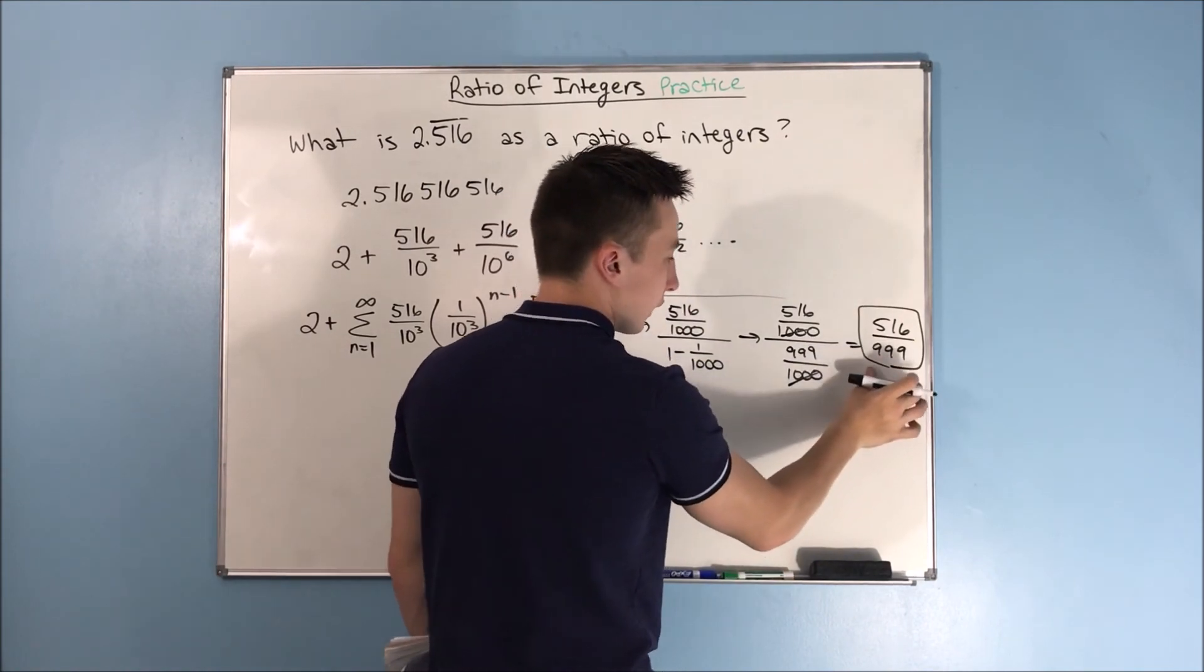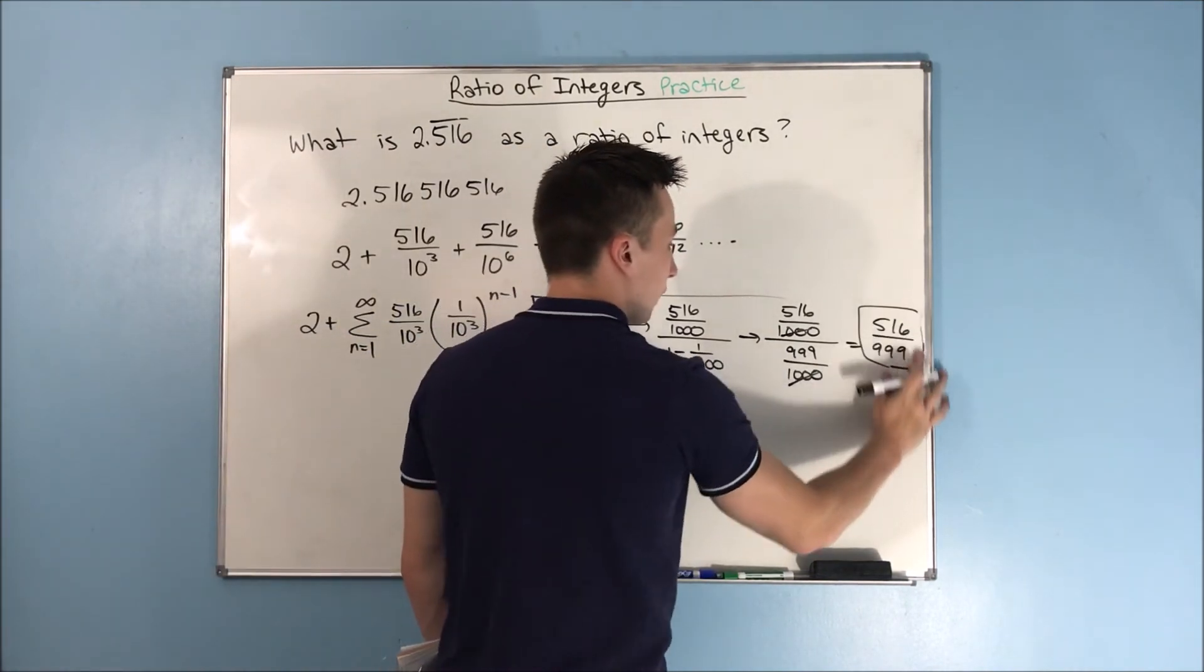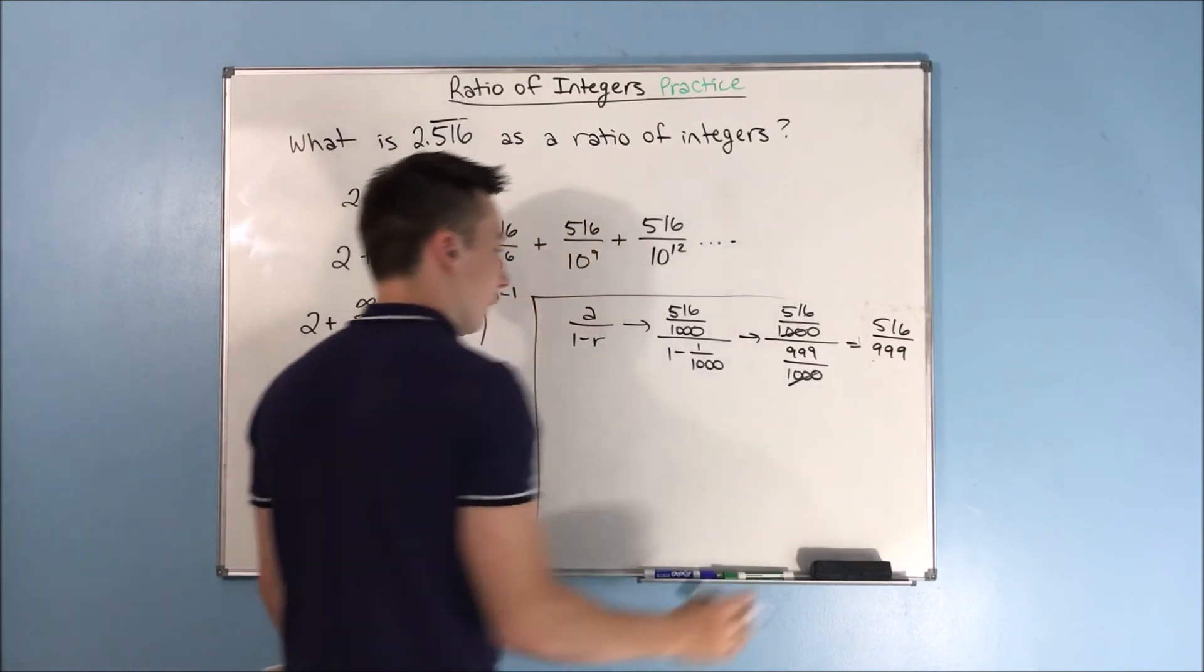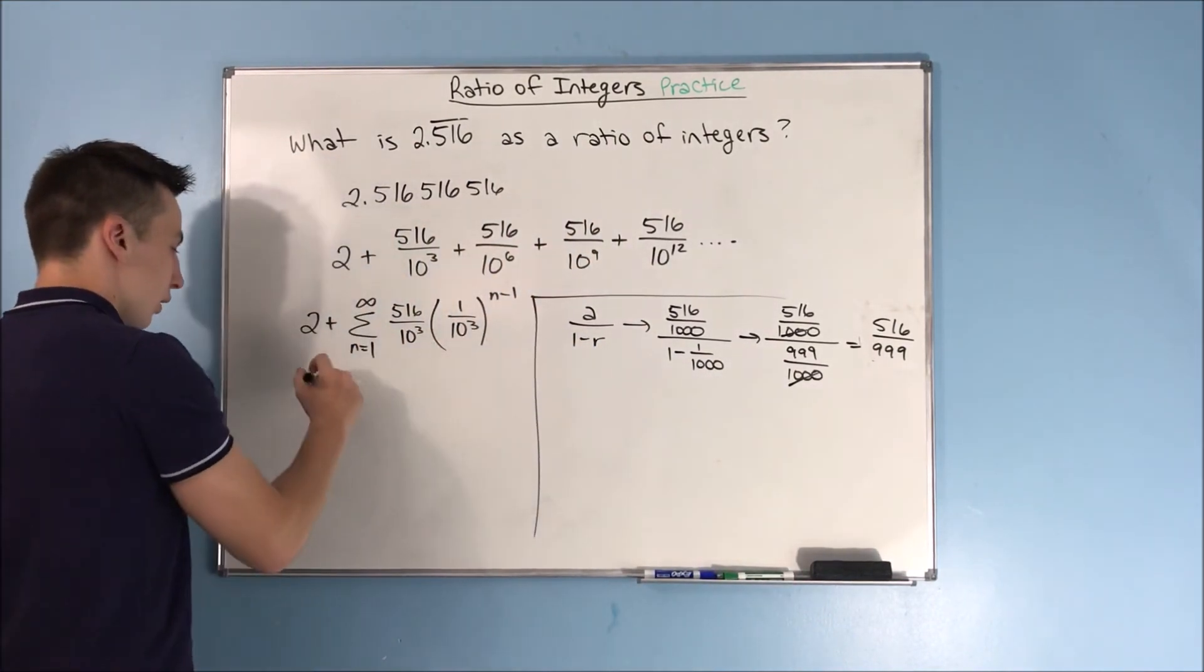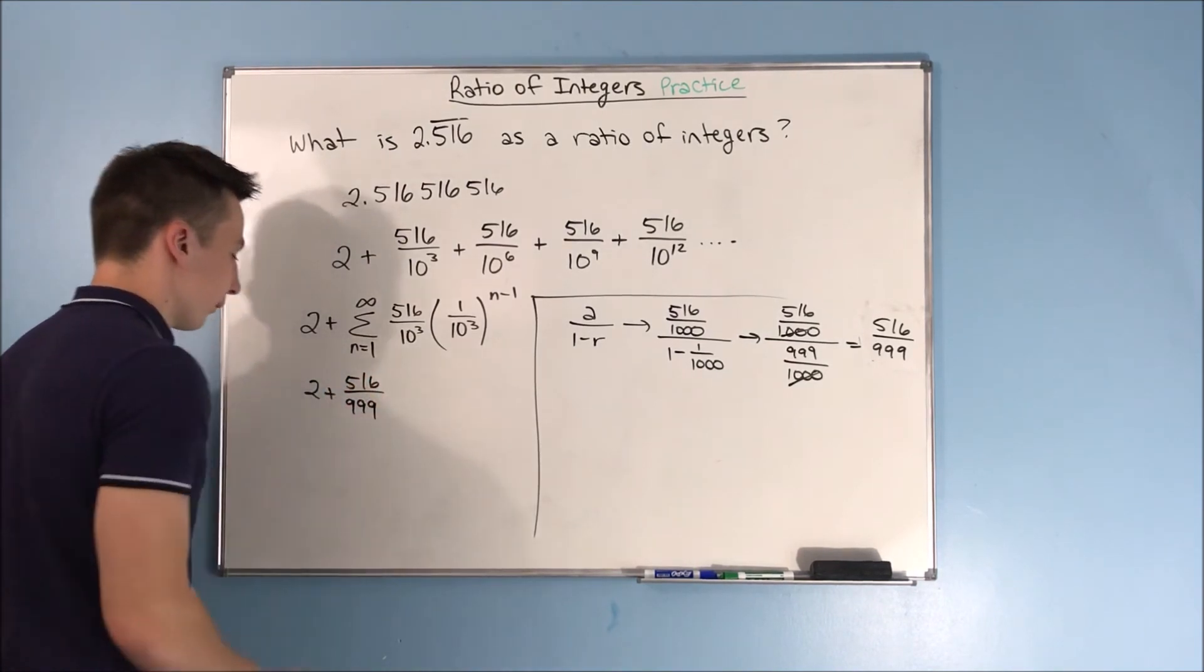That is the sum of our infinite series. I probably shouldn't circle it because it's not our answer. What's left to do is we still have to add through that 2. So, we have to do 2 plus 516 over 999.